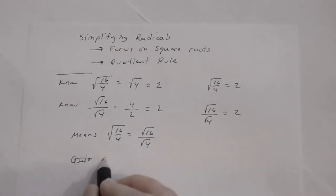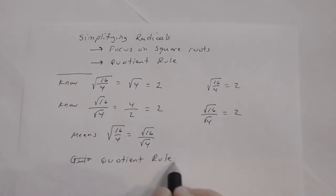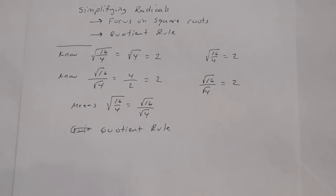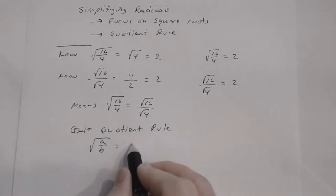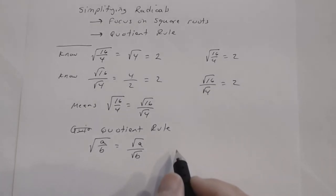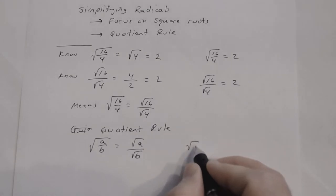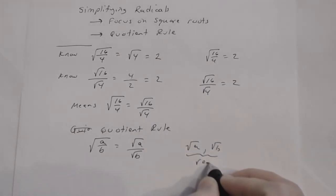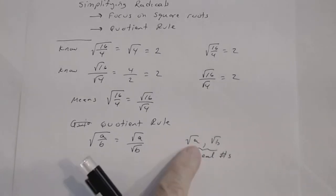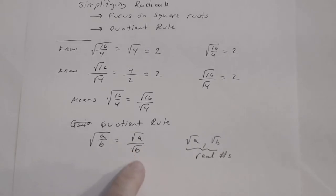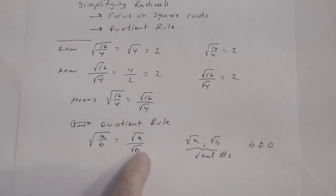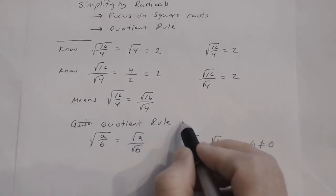The quotient rule says: the square root of a fraction a divided by b can be written as the square root of the numerator divided by the square root of the denominator. We're assuming that the square root of a and the square root of b are real numbers, meaning a and b cannot be negative. Also, b cannot equal zero because you can never divide by zero. So a and b can be any positive number, or a can be zero, but b cannot be zero.